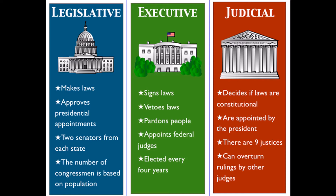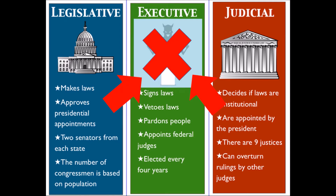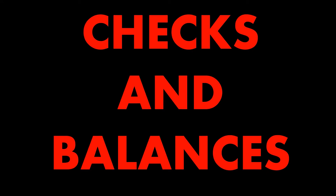For instance, if one of the branches were to become corrupt with a malicious leader, the other two branches can limit its influence and power, protecting the citizens of that government. This limiting effect — where one branch of government stops another from abusing its power — is called checks and balances.